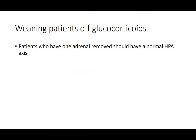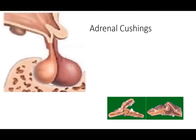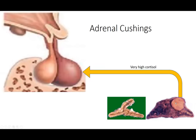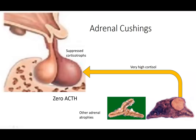Here's a key point: if you have one adrenal removed, you should be completely normal and not need steroids. That's a really key message. If a patient has adrenal Cushing's, the tumor is making a large excess of cortisol, causing clinical Cushing's syndrome. The very high cortisol will suppress the corticotrophs, and therefore the patient will have no ACTH. If there's no ACTH, the other adrenal gland will atrophy.